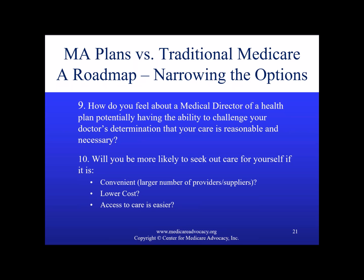Finally, question ten: will you be more likely to seek out care for yourself if it's convenient — if you can see whatever provider you want and are not restricted to a narrow network? Will you be more likely to seek care if it's at lower cost to you? If you have traditional Medicare without a supplement, you're looking at 20% for Part B expenses. Is cost sharing less in a Medicare Advantage plan? Is access to care easier for you in general? These are the issues and questions that form a roadmap to help organize thoughts in assisting someone with deciding whether or not to enroll in a Medicare Advantage plan.